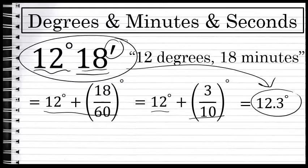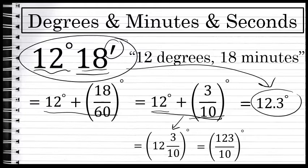If I would want to represent this as a fraction, I could simply say this 12 degrees plus 3/10 of a degree is, as a mixed number, 12 and 3/10 degrees. Or another way to state that as an improper fraction would be to say this is 123/10 degrees.